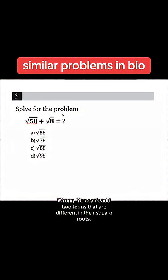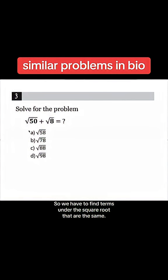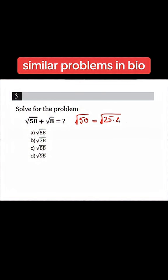So we have to find terms under the square root that are the same. We can rewrite 50 as √(25 × 2), which is equal to √(5² × 2), which is equal to 5√2.